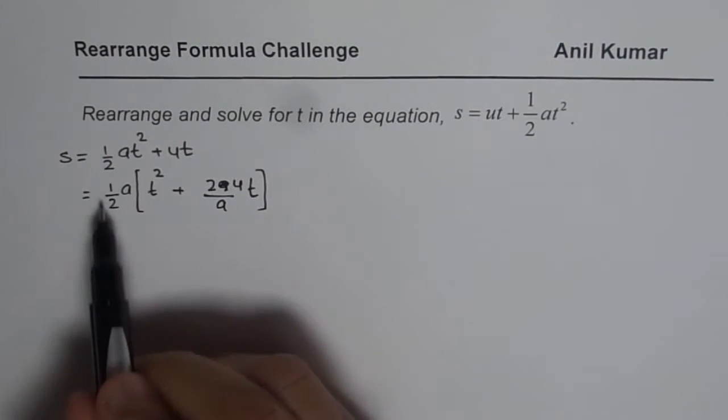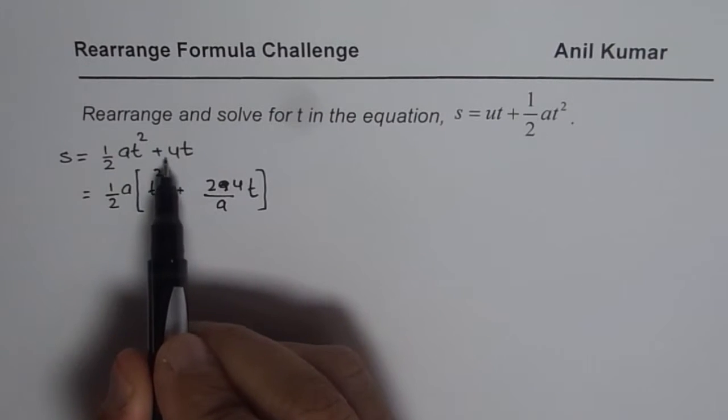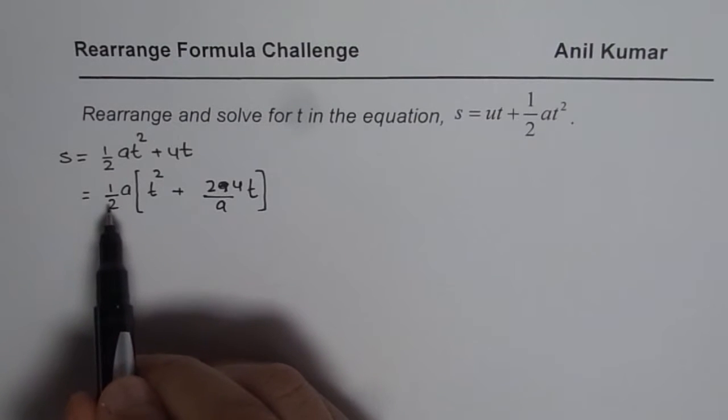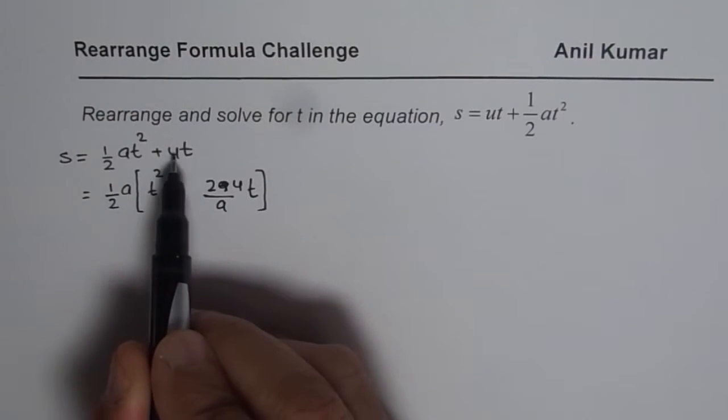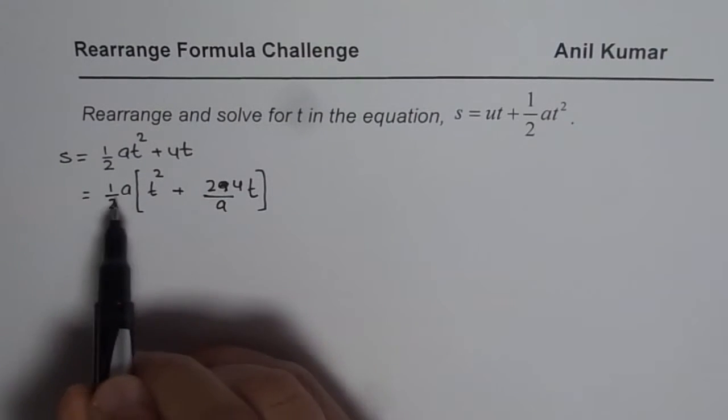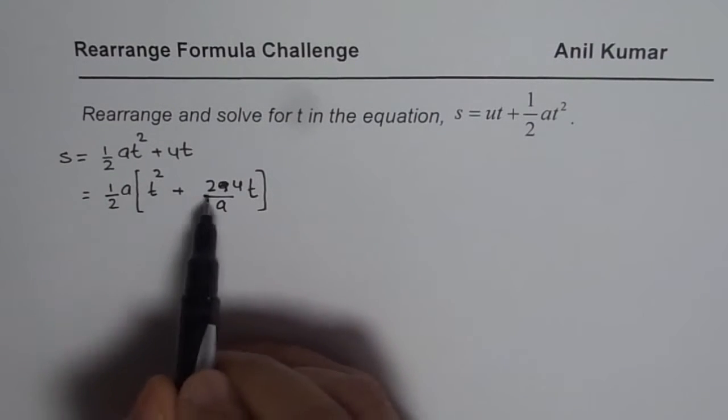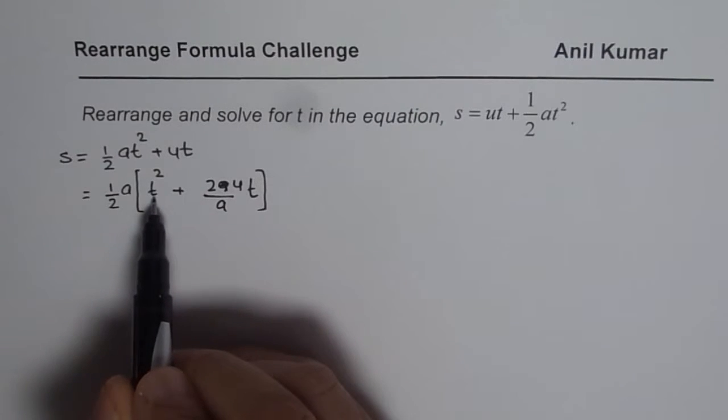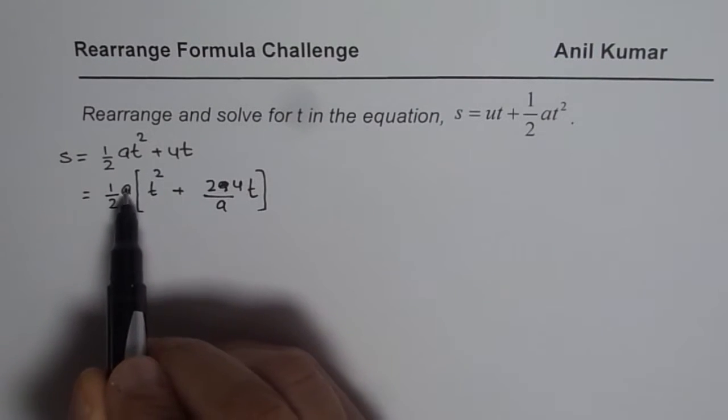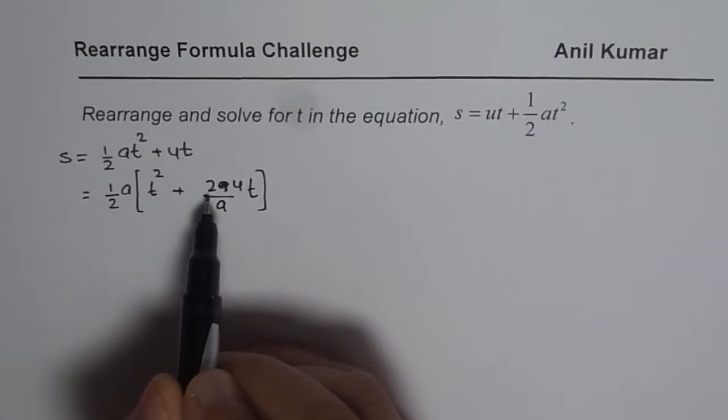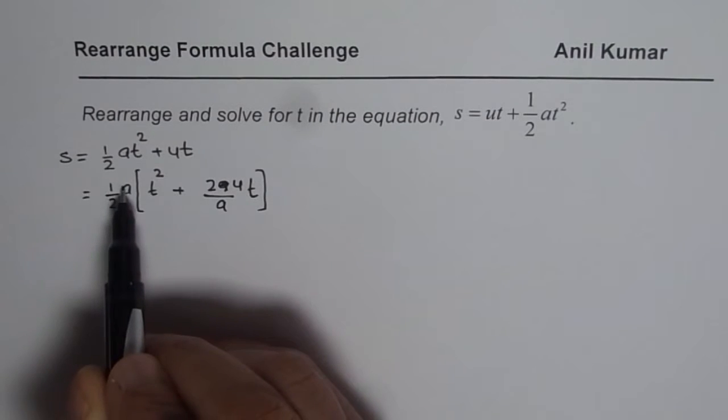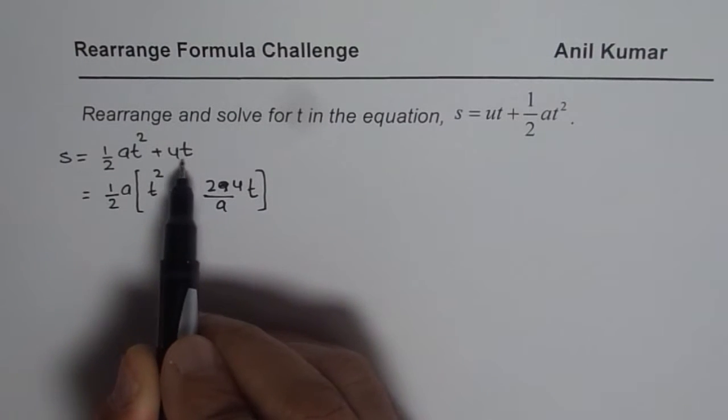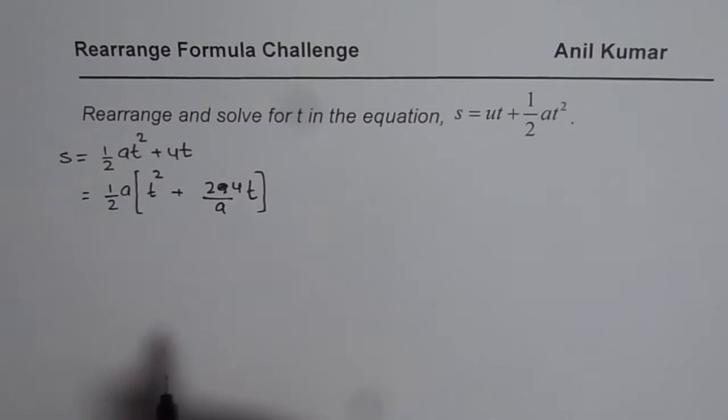So one term we have taken outside, which is half a. So when you factor this out, you get 2 times and then divide by a. You can check this out by expanding. If you expand, half a t square is your first term. And the second term will be half a times 2u divided by a. 2 and half will cancel, a and a will cancel. You will be left with ut.